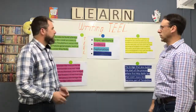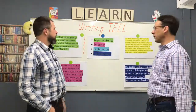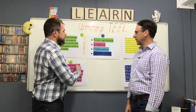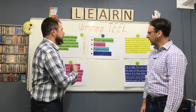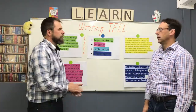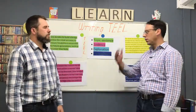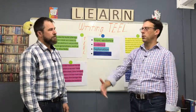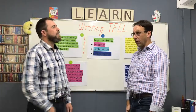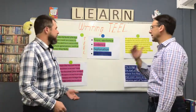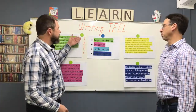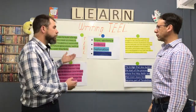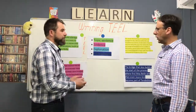TEAL stands for Topic sentence, Evidence, Explanation, and a Linking sentence. So if you remember TEAL, it's going to help you remember the things you need to have in your paragraph. Your first sentence, then the second, third, and fourth will build out from there.